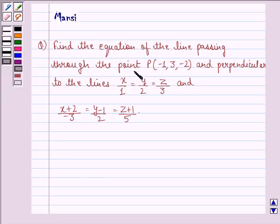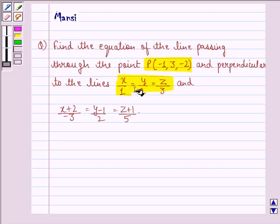find the equation of the line passing through the point P that is minus 1, 3, minus 2 and perpendicular to the lines x upon 1 equals to y upon 2 equals to z upon 3 and x plus 2 upon minus 3 is equal to y minus 1 upon 2 is equal to z plus 1 divided by 5.